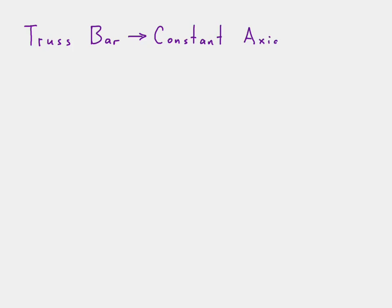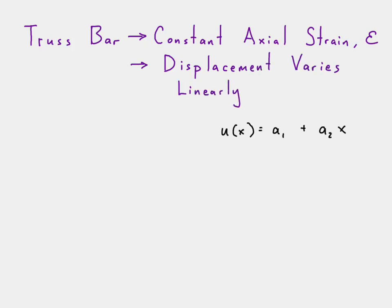Starting with the truss bar, we know that there's constant axial strain because you can only have loads applied at the nodes. And if that's true, then the displacement must vary linearly. So if it can vary linearly, that means we'll only have some displacement with one x term, not x squared or anything like that.